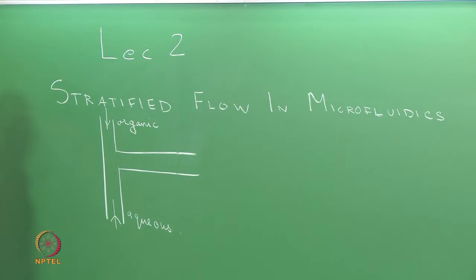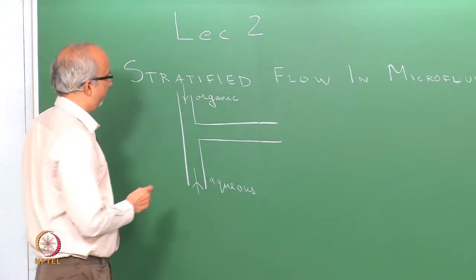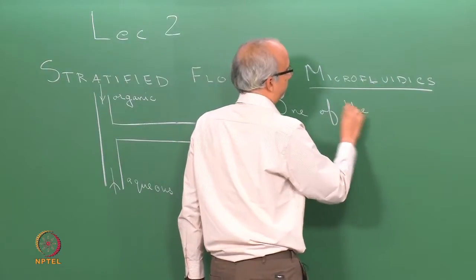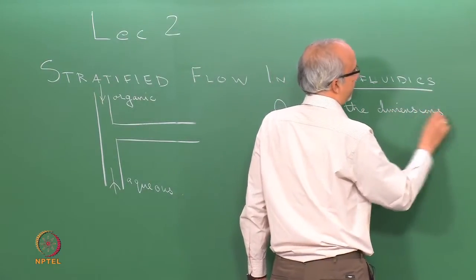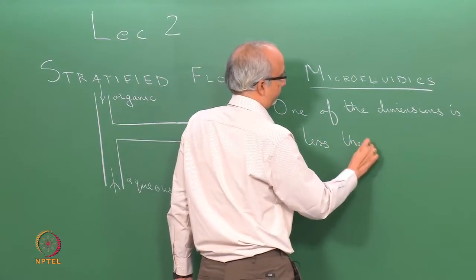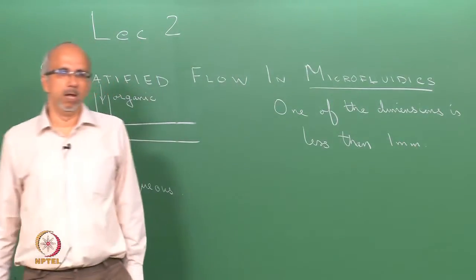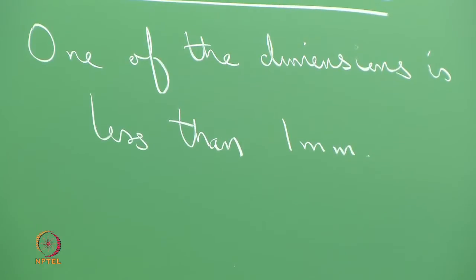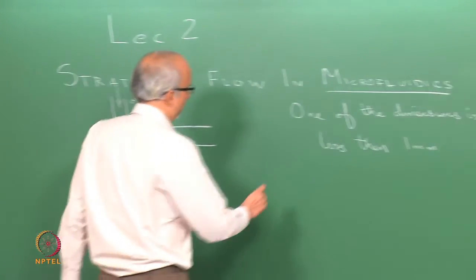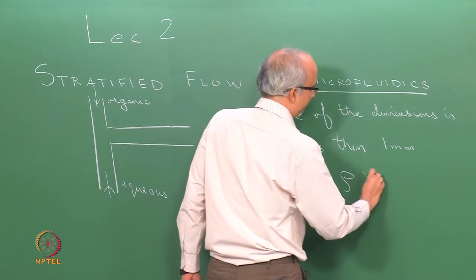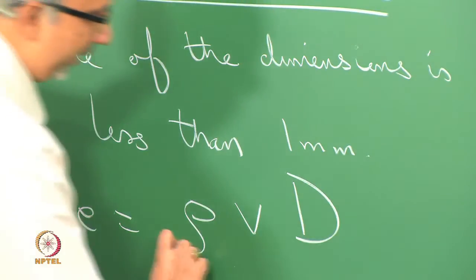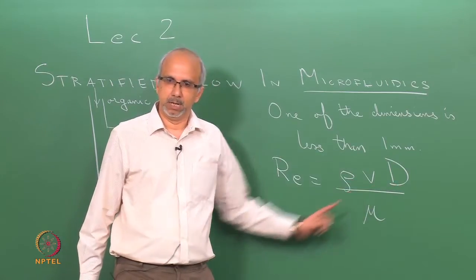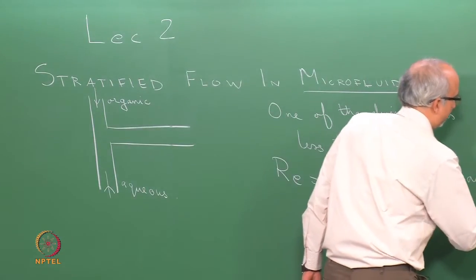The objective today is to understand the hydrodynamics. In microfluidics, one of the dimensions is less than 1 millimeter. A key feature of any flow in a microfluidic channel is that the Reynolds number is very low, defined as density multiplied by average velocity multiplied by the characteristic dimension divided by the viscosity. With very low diameter channels, we are talking about very low Reynolds number flows.